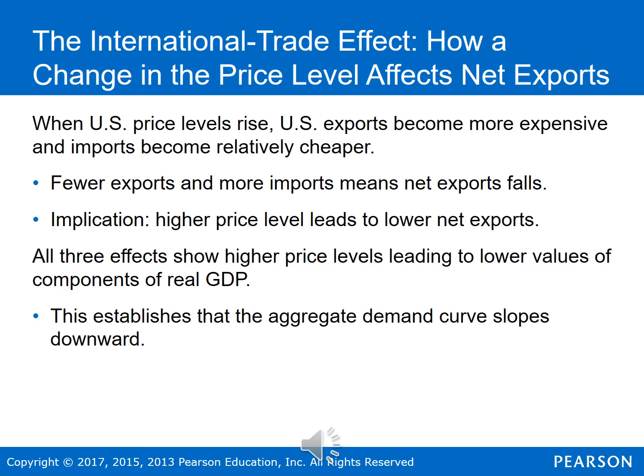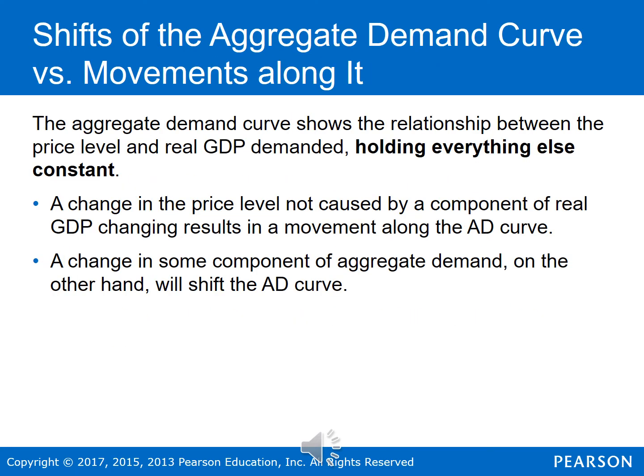So all three of these effects show higher price levels leading to lower values for the components of real GDP, and this is why the aggregate demand curve slopes downward. Just like we had a difference between movements in the demand curve and movements along the demand curve for individual markets, we have the same thing for the aggregate demand curve. The aggregate demand curve shows the relationship between the price level and real GDP demanded, holding everything else constant. A change in the price level results in movement along the aggregate demand curve, while a change in some component of aggregate demand shifts the entire curve to the left or to the right.